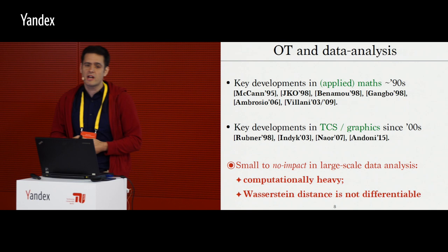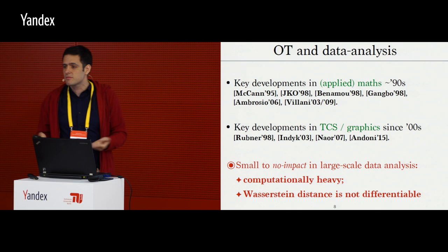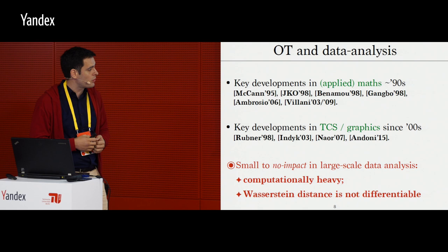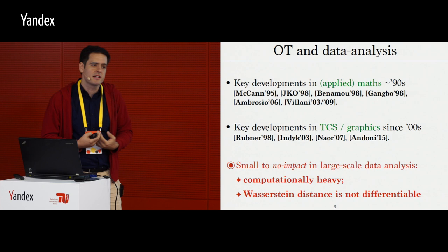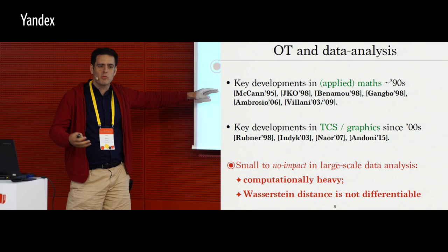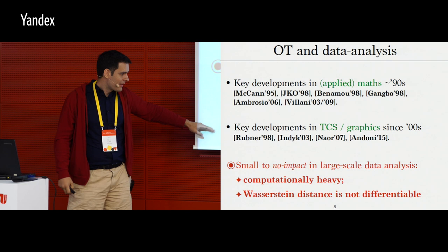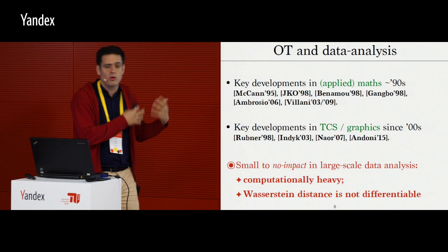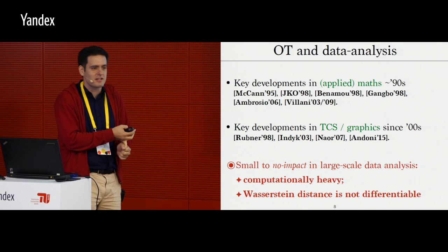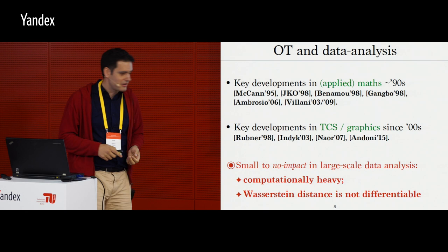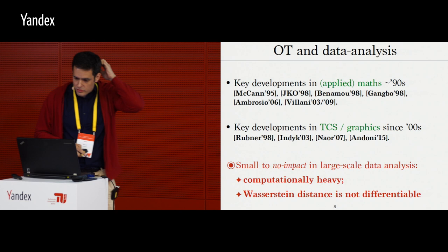Optimal transport has had some impact on theoretical computer science, graphics, and computer vision under the name Earth Mover's Distance. But in practice, there have been very few applications of this distance to machine learning or large-scale data analysis. In my opinion, the first obstacle is very clear: it's very heavy computationally. The second is that the distance is not differentiable in its original form. This matters because we are constantly differentiating Kullback-Leibler, constantly differentiating the squared Euclidean distance as part of a pipeline. If you can't differentiate it, you generally don't want to use a distance as a loss.